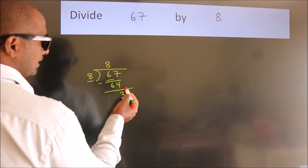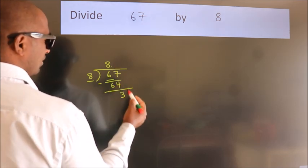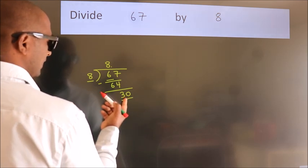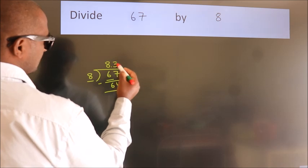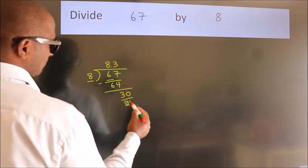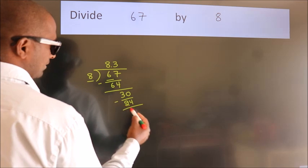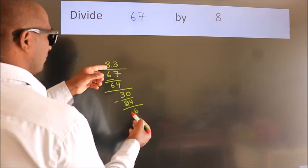No more numbers to bring down, so we put a dot and take 0, making 30. A number close to 30 in the 8 table is 8 times 3 equals 24. Now we subtract and get 6.